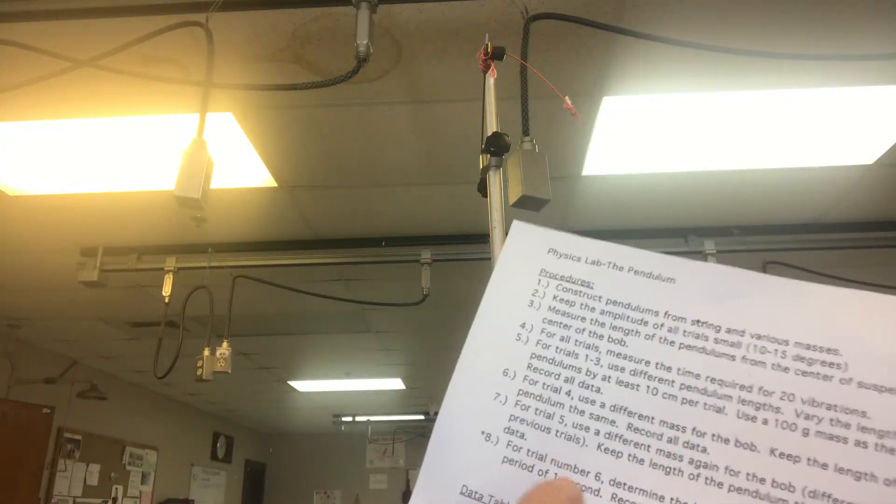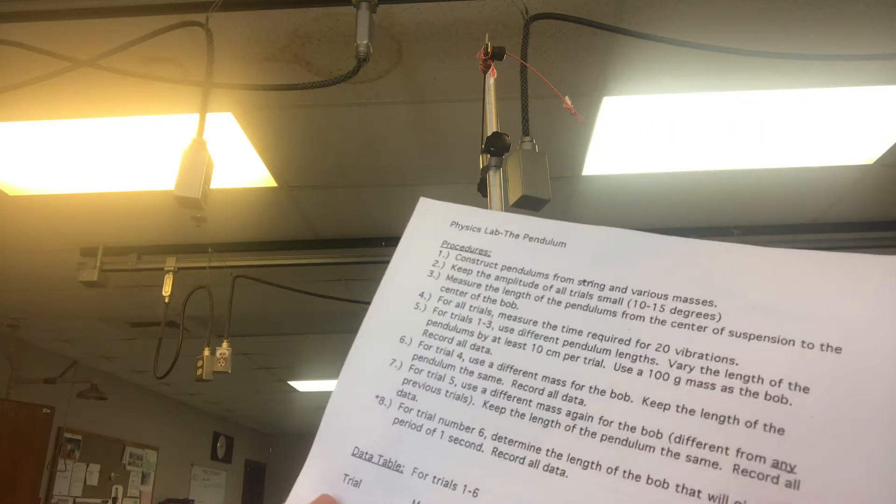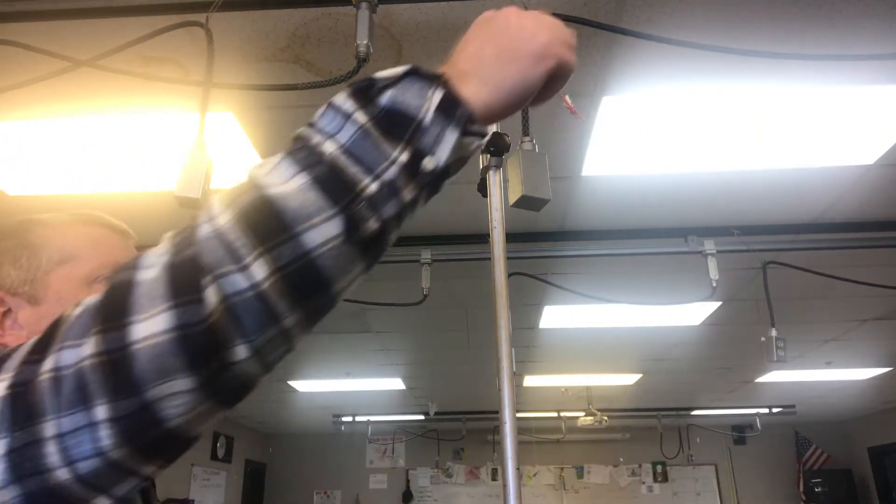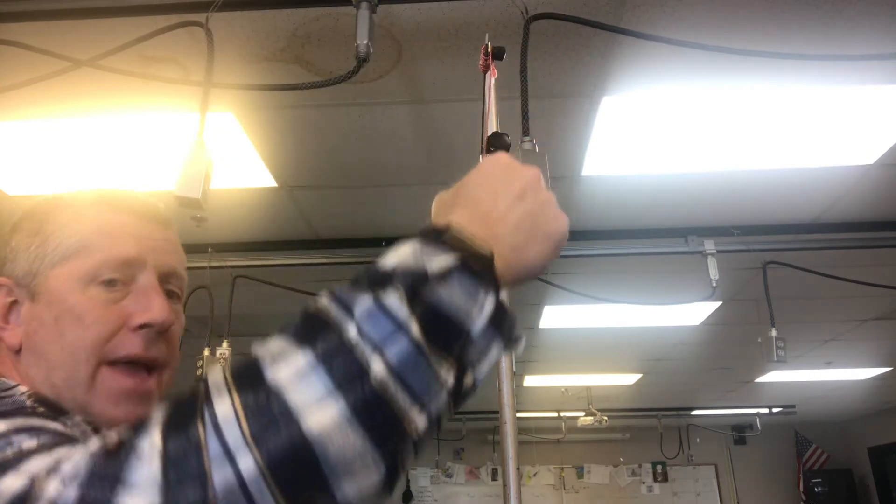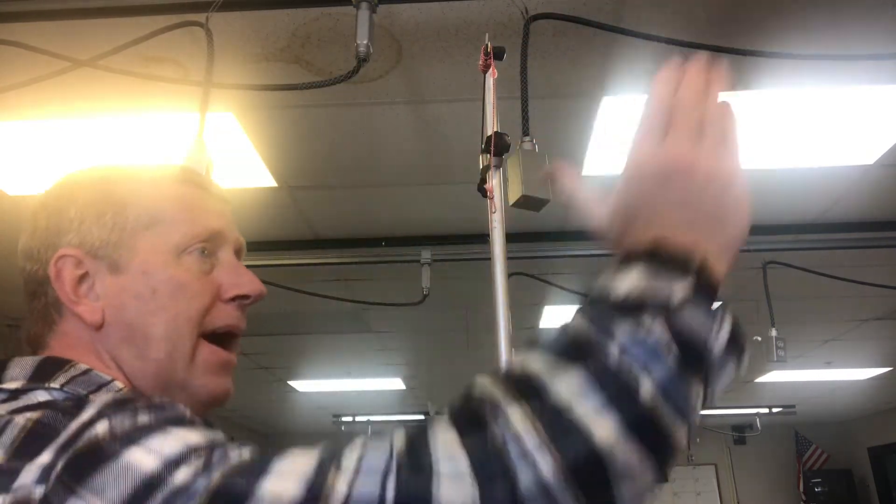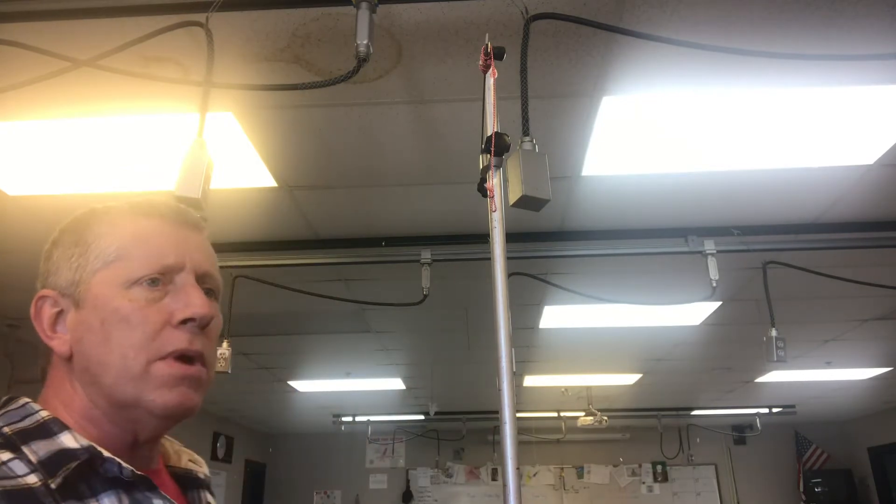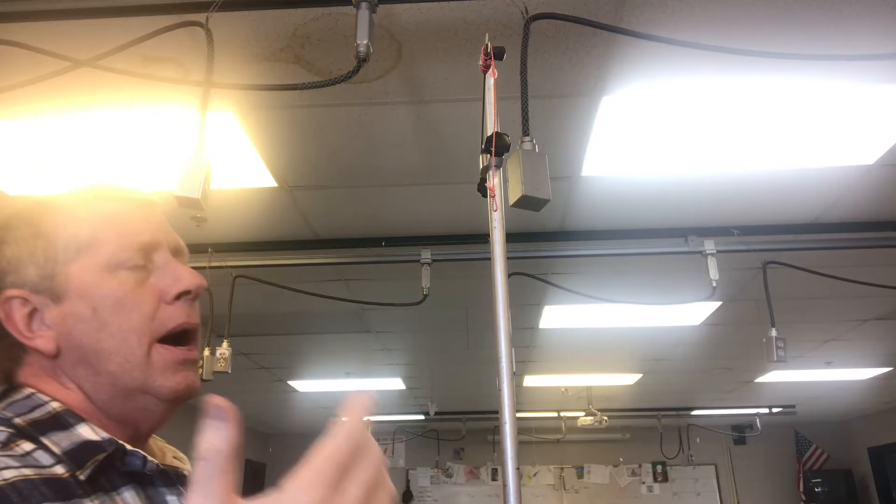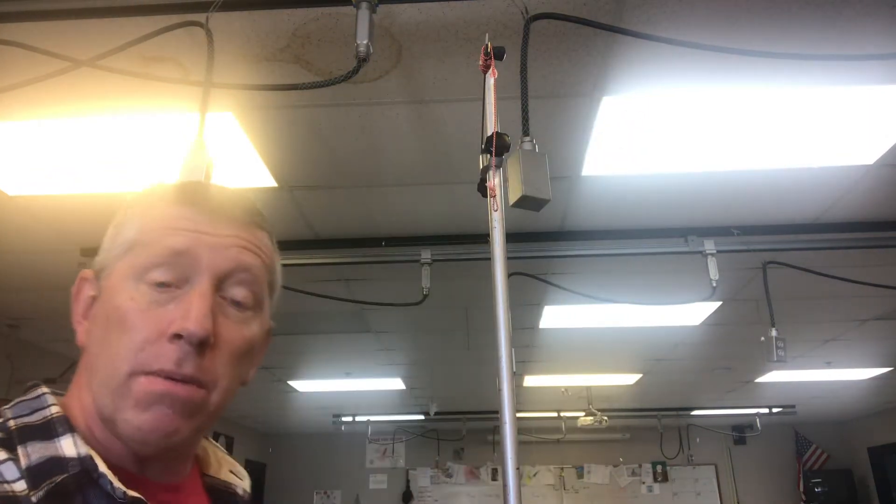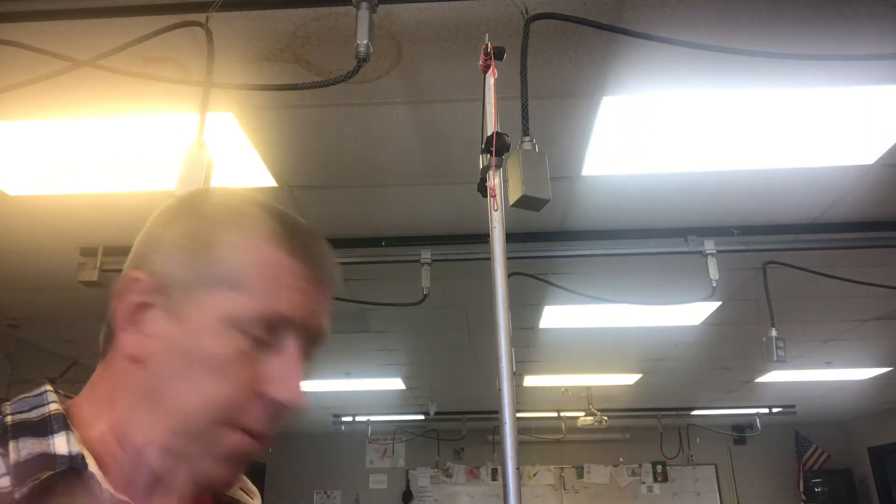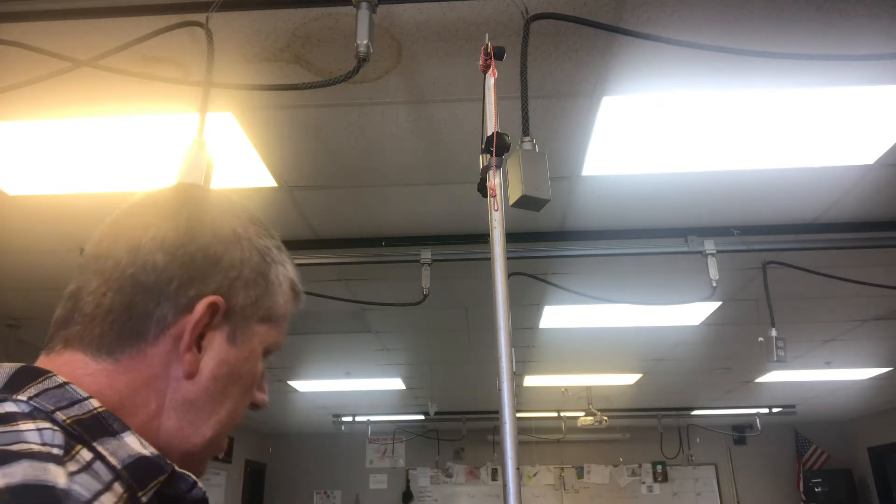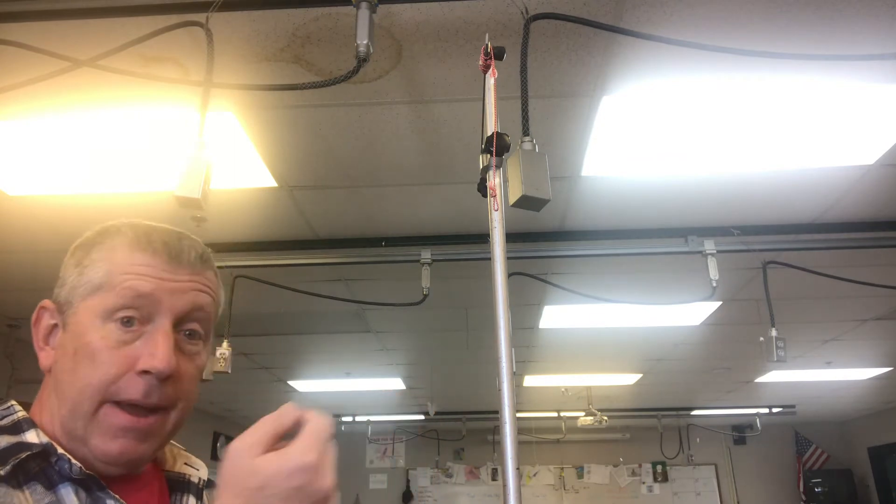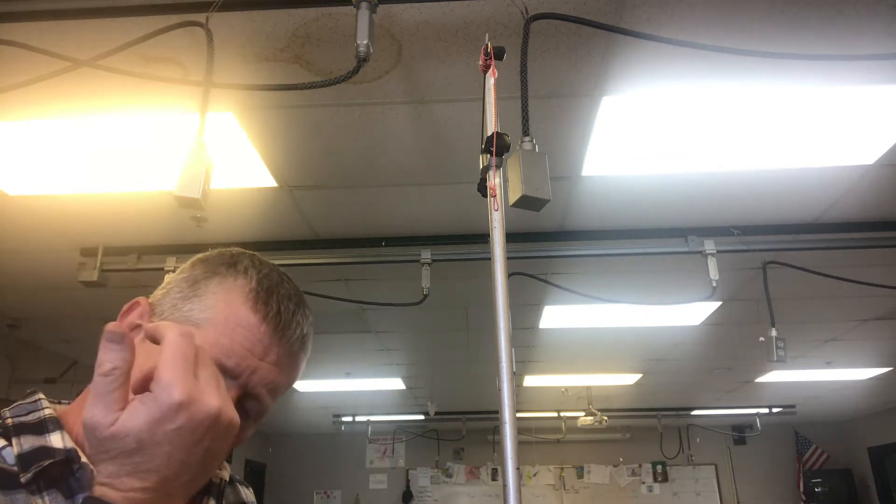So for trial number six, determine the length of the bob that will give a one second period of time. What I need to do is come up with a length of this that will give me a back and forth of one second. The one we were just doing, I don't know what the times were, you do, right? You have it written down. That was probably pretty close, was it not? Hang on. We're going to get this part. I'm going to have to get involved now if we're going to do this right.